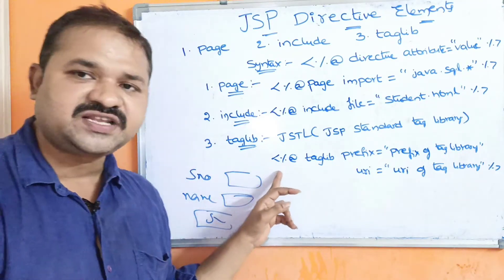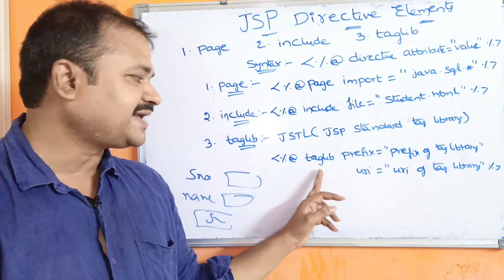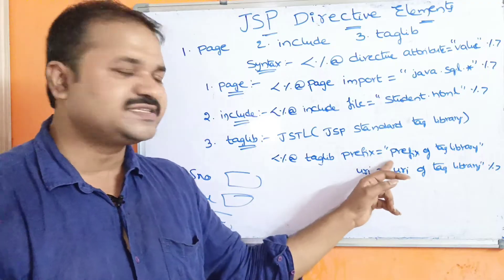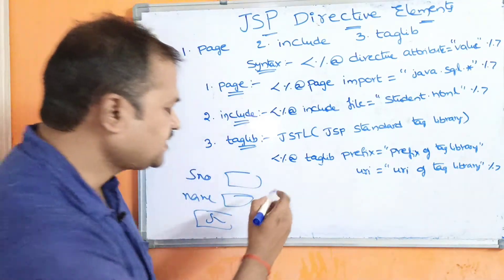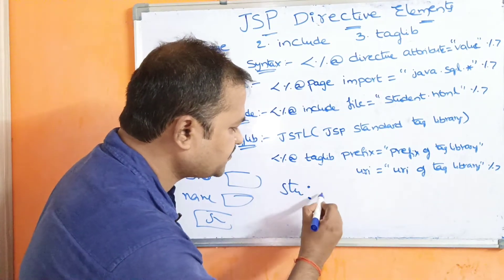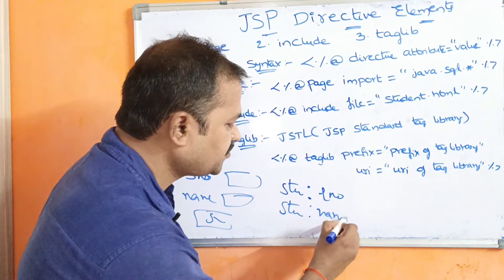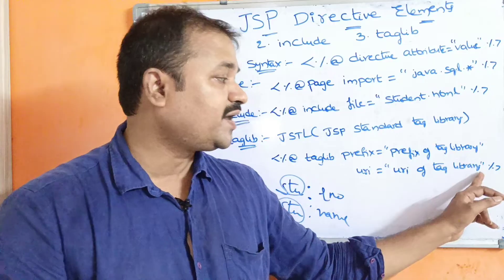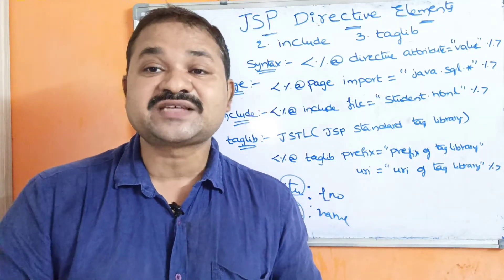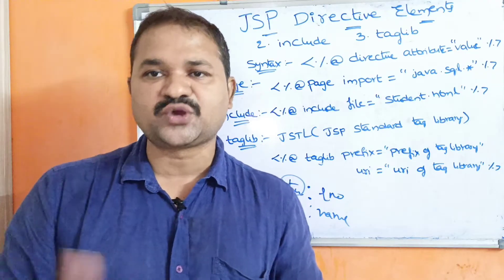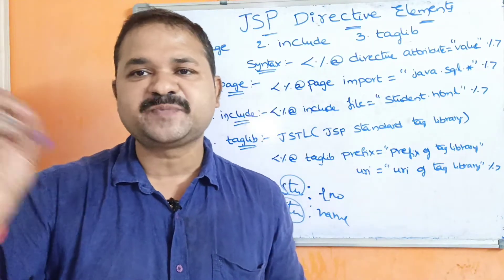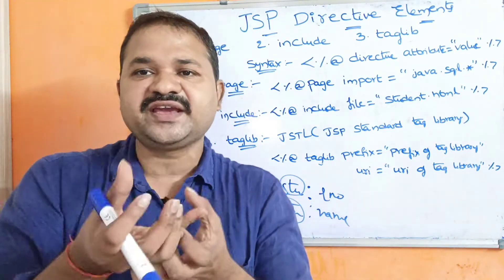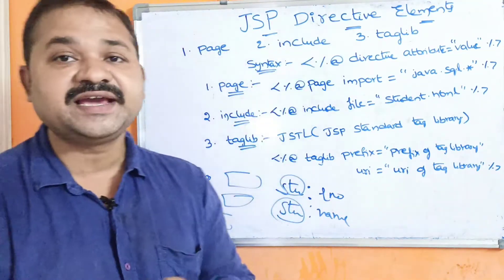Let us see the syntax for taglib. It starts with less-than percentage at-rate and ends with percentage greater-than. The directive name is taglib, and it uses two attributes: prefix and URI. Prefix is the starting value of the tag library — for example, stu:roleno or stu:name. URI stands for Uniform Resource Identifier, similar to URL (Uniform Resource Locator), and it specifies where the tag library is stored. So that is about JSP Directive Elements.